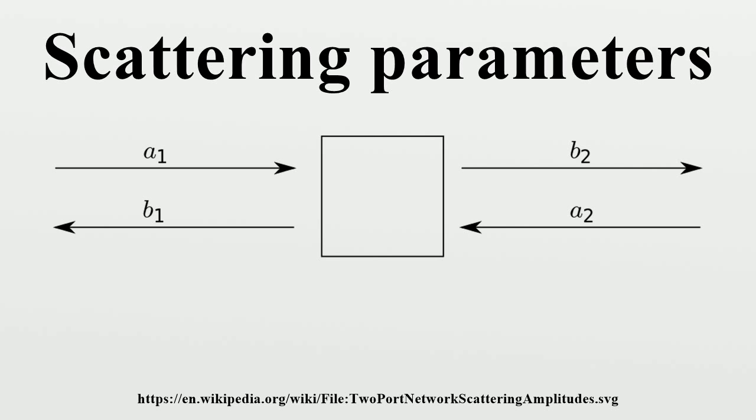VSWR, however, from its definition, is always positive. A more correct expression for port k of a multiport is VSWR_k = (1 + |S_kk|)/(1 - |S_kk|).